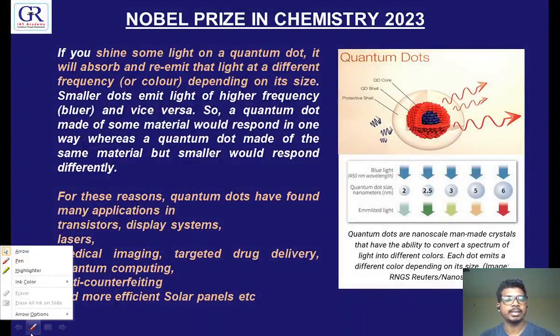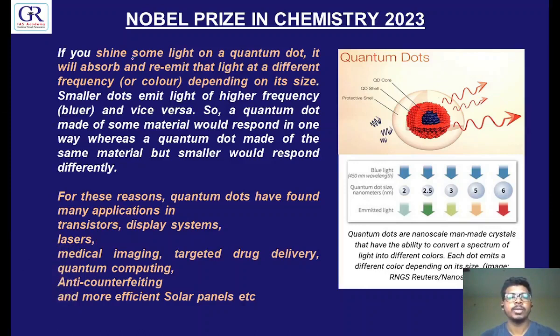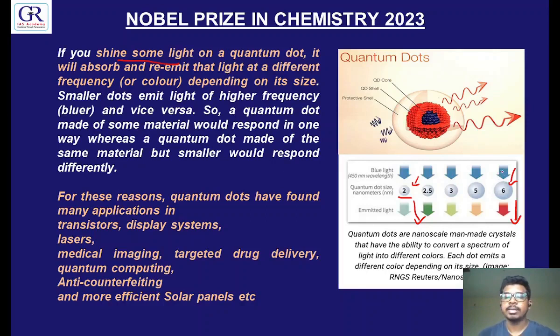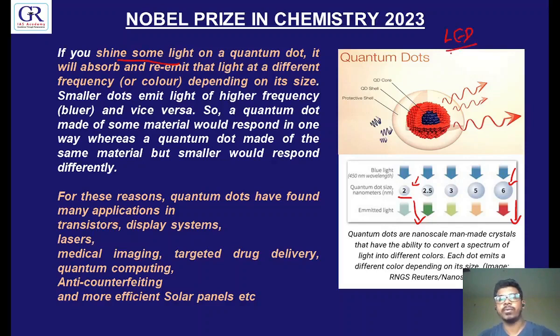The second property of quantum dots is that when you shine some light on them, based on their size, they emit a different color light. If you make a quantum dot of 2 nanometres, it will emit one kind of light. If you make a quantum dot of 6 nanometres, it will emit a different kind of light. The material is the same — only the size is changed. By changing the size, the color emitted by the quantum dots is different. In TVs, if you want a nice display, you want different colors clearly differentiated. Right now the technology is LED; quantum dot technology is the next level of LED.